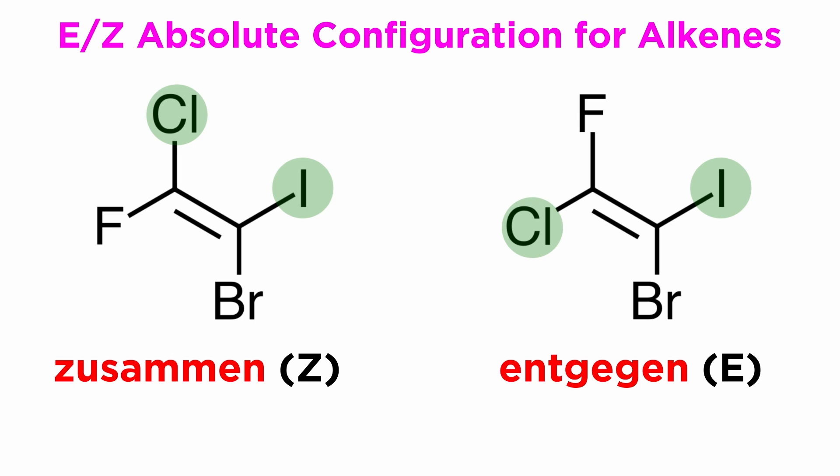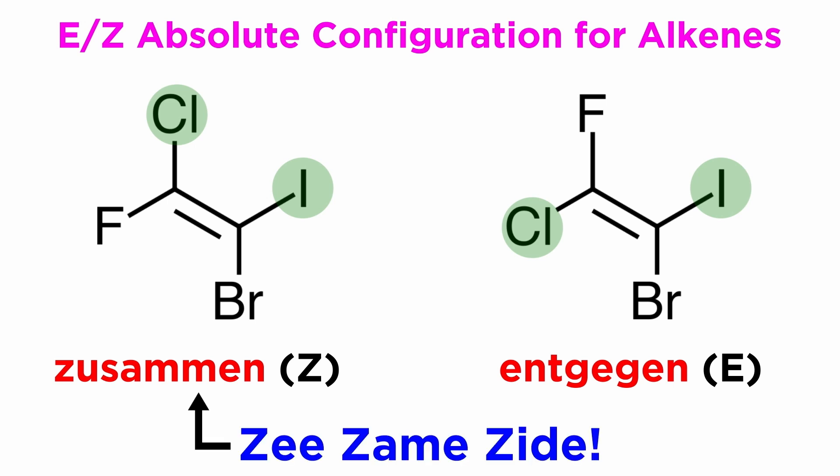These stand for Zusammen and Entgegen, which are German words meaning together and opposite respectively. A very silly but very effective way to remember this convention is: Z — same side. Opposite sides — E. So that's really all there is to this convention.